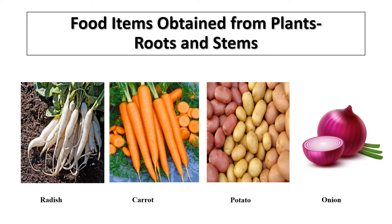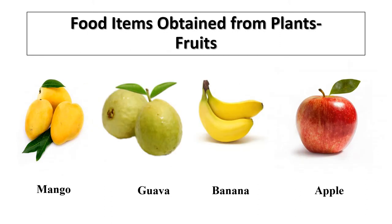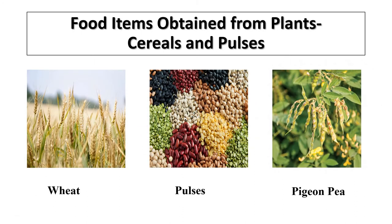Potato and onion are stems. Similarly, cauliflower and pumpkins are flowers, and spinach and lettuce are leaves. And mango, guava, banana, and apple are fruits that we get from plants. Various food items produced by plants can be grouped as follows.